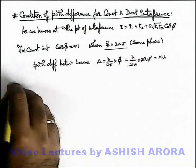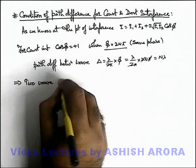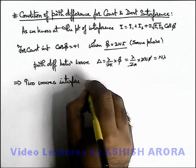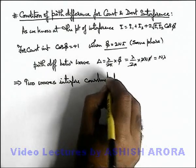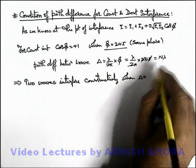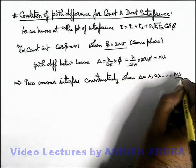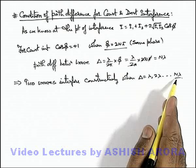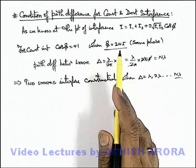This implies the 2 waves interfere constructively when their path difference is a multiple of λ — that is, λ, 2λ, and so on up to nλ. If the path difference in the 2 waves is a multiple of λ at the point of superposition, the intensity is going to be maximum.